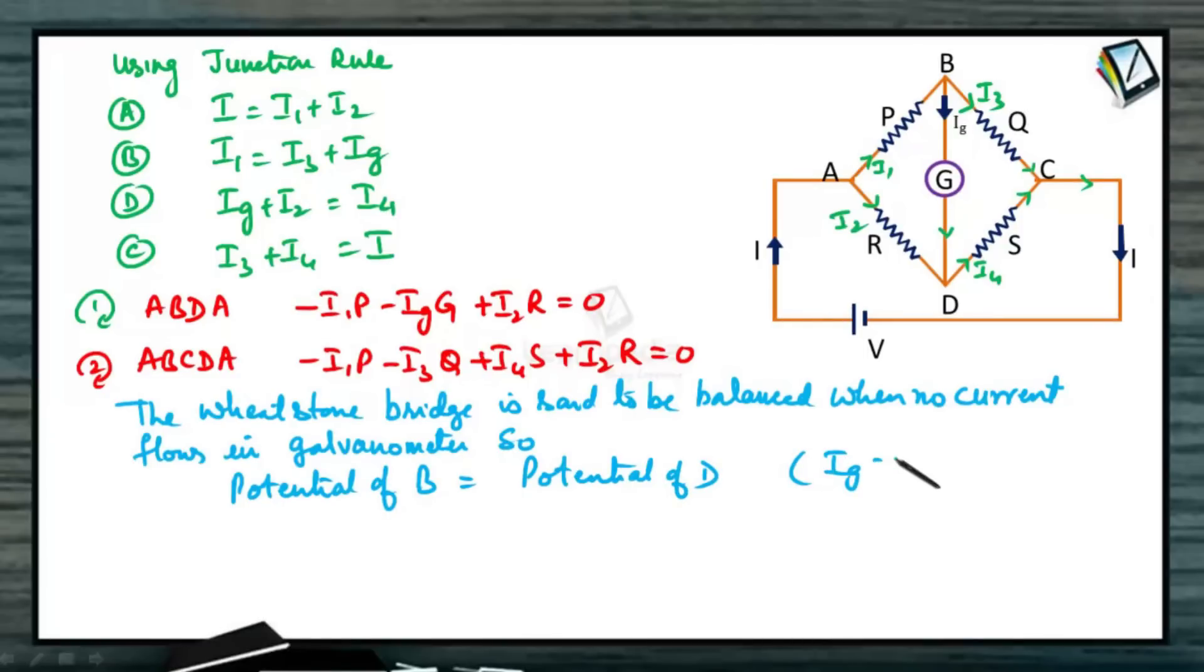Since IG is equal to 0, no current flows through galvanometer, meaning the current through the galvanometer is 0. In this arm, the current is 0. That means potential of point B and potential of point D is equal. When potential of point B and potential of point D is equal, current in the galvanometer is equal to 0, IG is equal to 0.